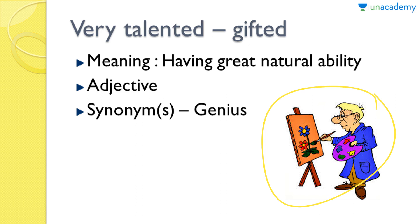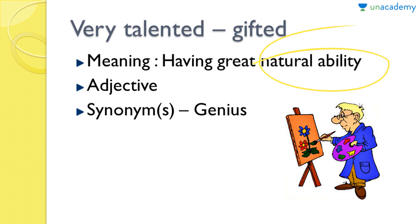It's an adjective used to describe. The synonym is 'genius' — he's a genius in writing, in singing, simply a genius in sports. So 'gifted' is the word for 'very talented.' When someone has a natural ability, that means God has gifted them some kind of talent. So you can say 'gifted' instead of 'very talented' — she's a gifted teacher, he's a gifted singer, he has a gifted voice. For example, Arijit Singh is a gifted singer.